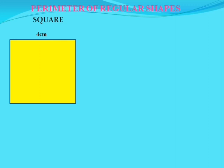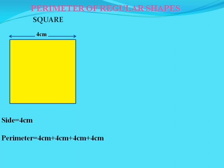Now we are going to find out the perimeter of regular shapes. First, take a square which does not have smaller squares in it, but its side is given as 4 centimeters. So the side of this square is 4 centimeters. Now we can find out the perimeter: perimeter equals 4 cm plus 4 cm plus 4 cm plus 4 cm.